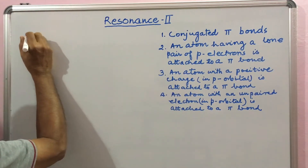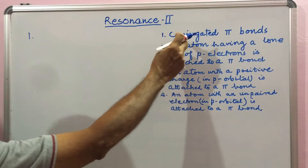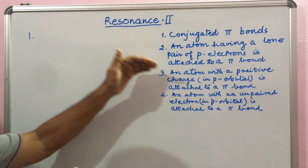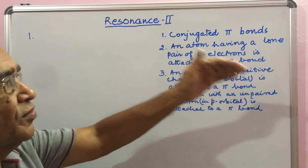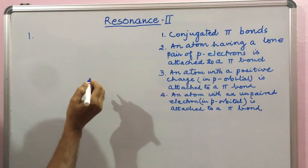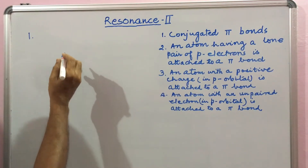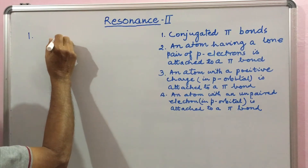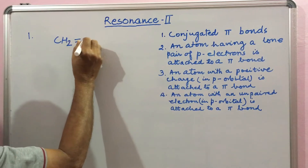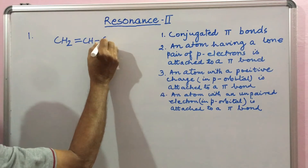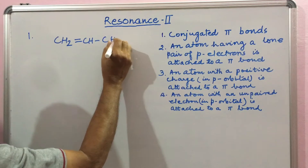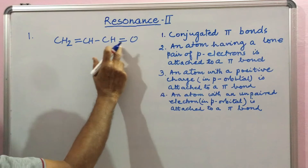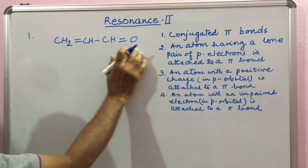Number one: Conjugated Pi Bonds. Conjugated Pi Bonds means alternating double-single-double-single bonds, and so on. First example: acrolein. Alternate double and single bonds — conjugated bonds are present here.